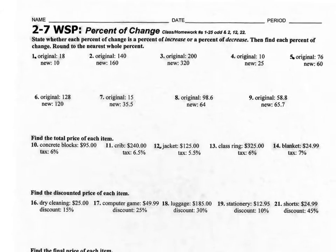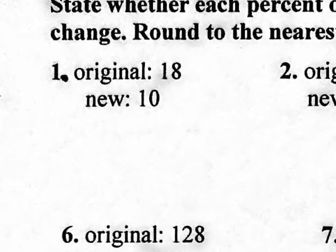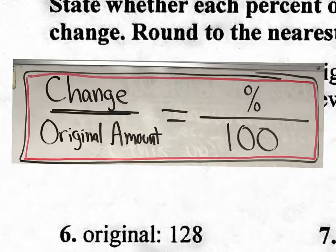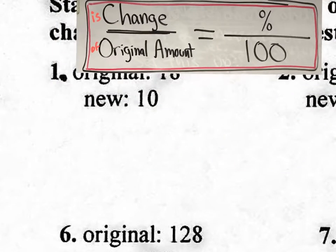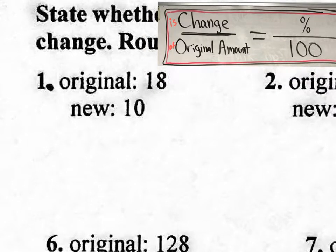Alright guys, so looking at the worksheet, let's just do a couple of them together here. Number one, the original is 18 and the new is 10. So we need to find out certain things. We need to know these notes. Obviously, we're still going to be doing proportions on certain questions like these beginning questions, even though we have shortcuts for other ones. So the question is, what is the change of the original amount? So if we have that memorized, we'll be good for these questions. Let's take a look at number one and let's set up the proportion.